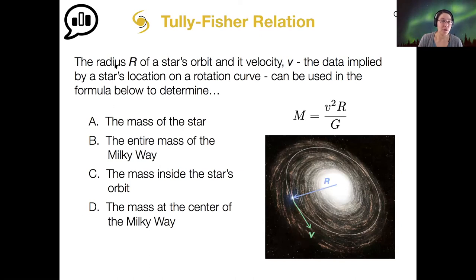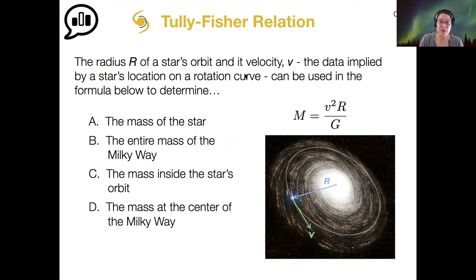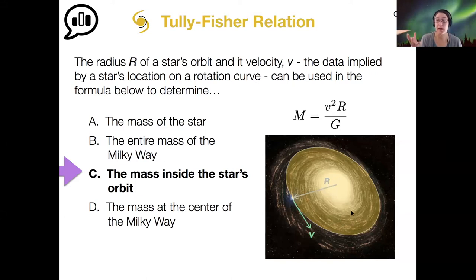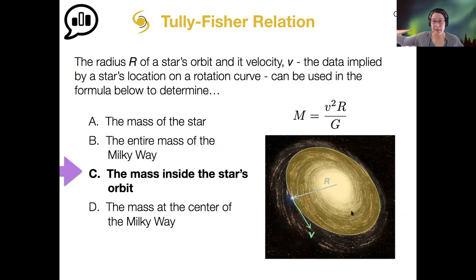If you know the radius of a star's orbit within our Milky Way and its velocity, then what can we determine? What we can get is the mass inside that particular star's orbit. This was how we found the mass of the disk of the Milky Way, and then we used the Doppler shift of farther-out gas to measure the mass of the entire Milky Way — that's how we figured out what fraction was dark matter.